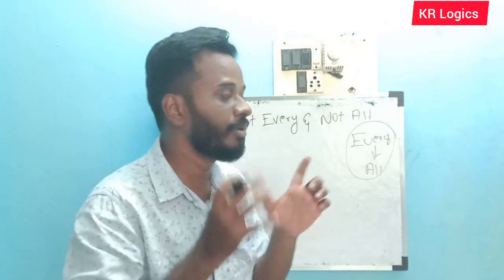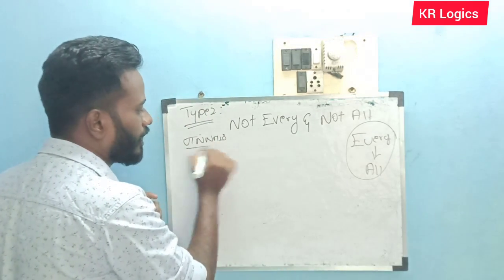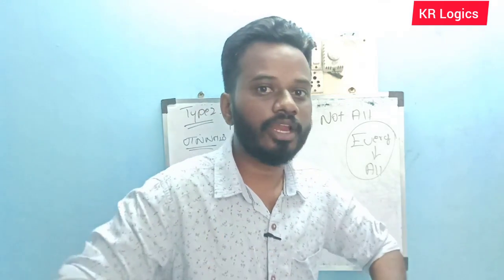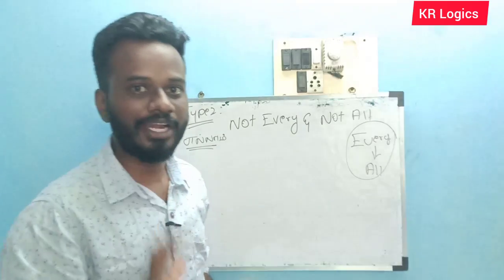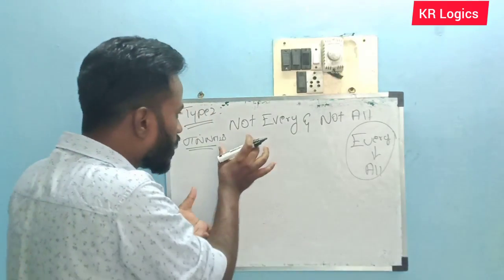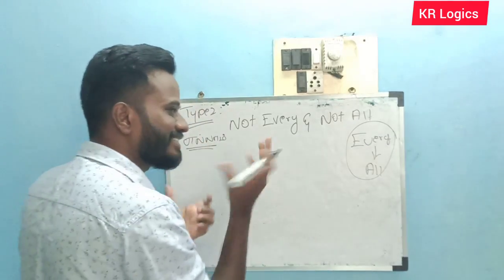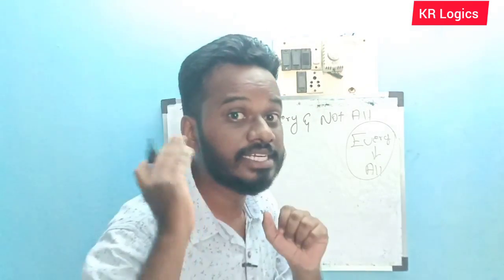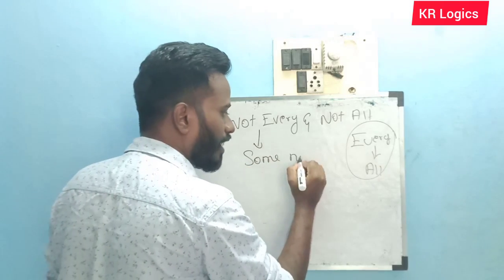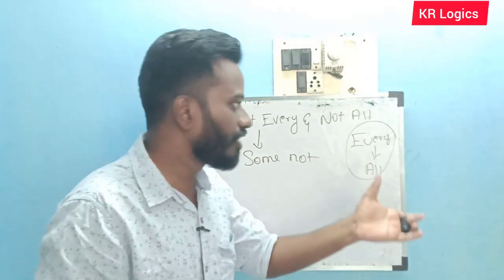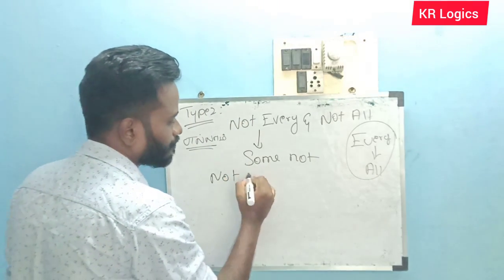All means everything. In Tamil translation, everything is all. If everything is all, it's the same thing: not every, not all. That's nothing but 'some not.' So: some not, not every, not all — they all mean the same.